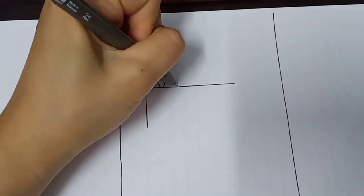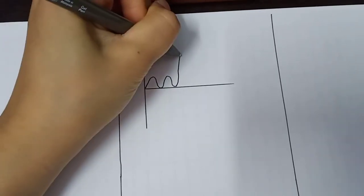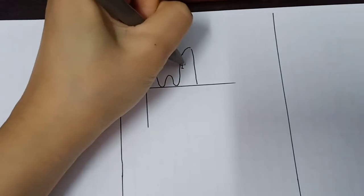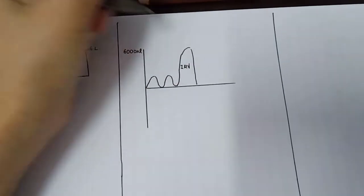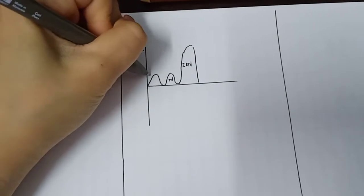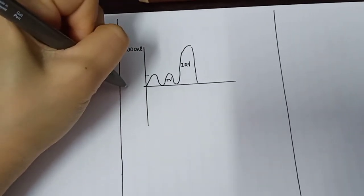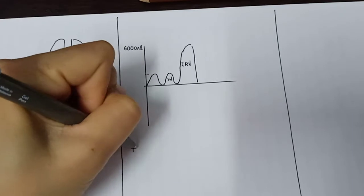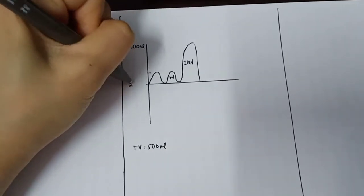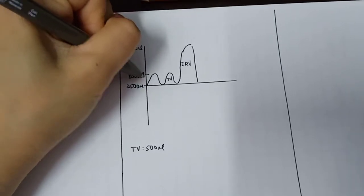When we try to inhale at the fullest maximum capacity of the lung, we call this the inspiratory residual volume, and this is the tidal volume. The tidal volume in a normal state is about 500 ml. So we have 2,500 ml here, and it becomes 3,000 ml with the inspiratory residual volume.